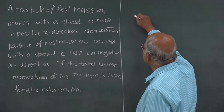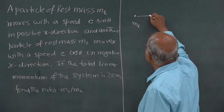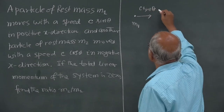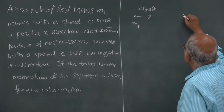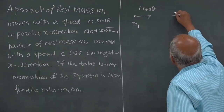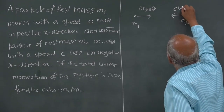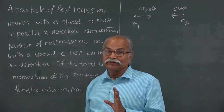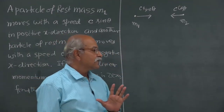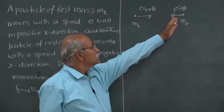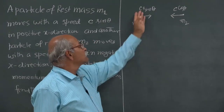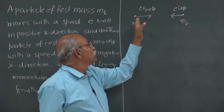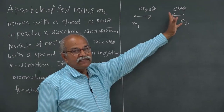In non-relativistic dynamics, if the total linear momentum is 0, it is very simple: m₁ times c·sinθ should equal m₂ times c·cosθ. Therefore m₂/m₁ should be sinθ/cosθ, which is tanθ.